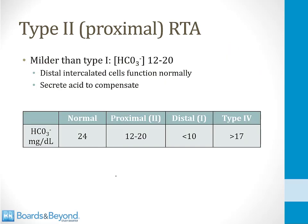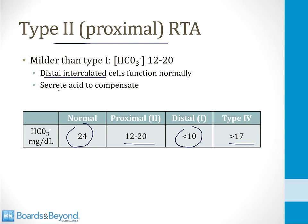Proximal RTAs are usually relatively mild. A normal bicarbonate is 24, and in a proximal RTA the bicarbonate will be about 12 to 20. This is in stark contrast to distal RTAs — when the distal nephron can't secrete acid, the bicarbonate gets very low, often less than 10. Type 4 RTAs also are relatively mild in terms of the decrease in bicarbonate. The reason for the mild decrease in proximal RTAs is because the distal intercalated cells function normally and secrete acid to compensate for the acidosis.